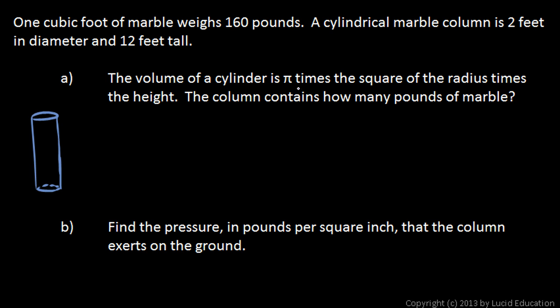We're told that the volume of a cylinder is pi times the square of the radius times the height. The volume is equal to pi times the square of the radius times the height. That's a standard formula for the volume of a cylinder. You might recognize this pi r squared as the area of the circle. That area times that height gives us the total volume.